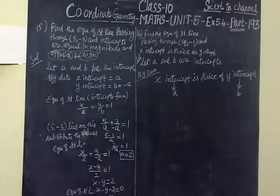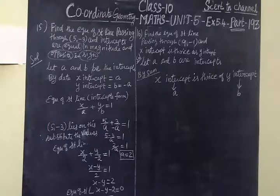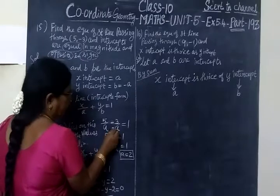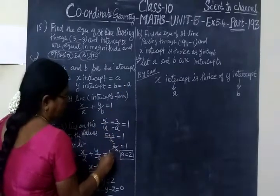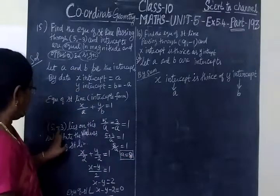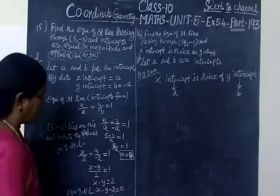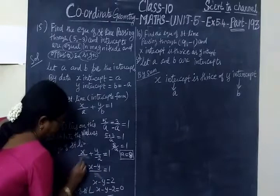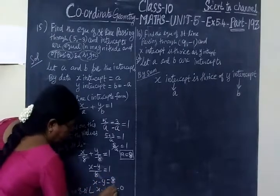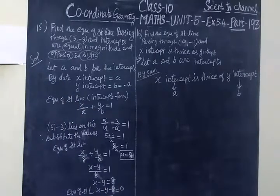Now we will check the answer for the 15th sum. The answer is x minus y minus 8 equals 0. Here x will be 5 and y will be minus 3, so minus minus gives plus, making it 5 plus 3 equals 8. So x minus y equals 8, and the answer x minus y minus 8 equals 0 is correct.